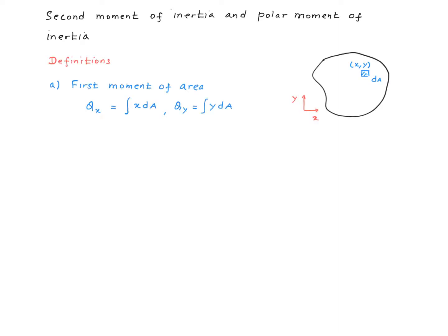First, let's define a few things in a general way, starting with what is called the first moment of area. Supposing we have an arbitrary shape like shown in this picture, we're going to define a two-dimensional x-y Cartesian coordinate system. Like we did before, we're going to take a little differential area dA at a point which has coordinates x and y.